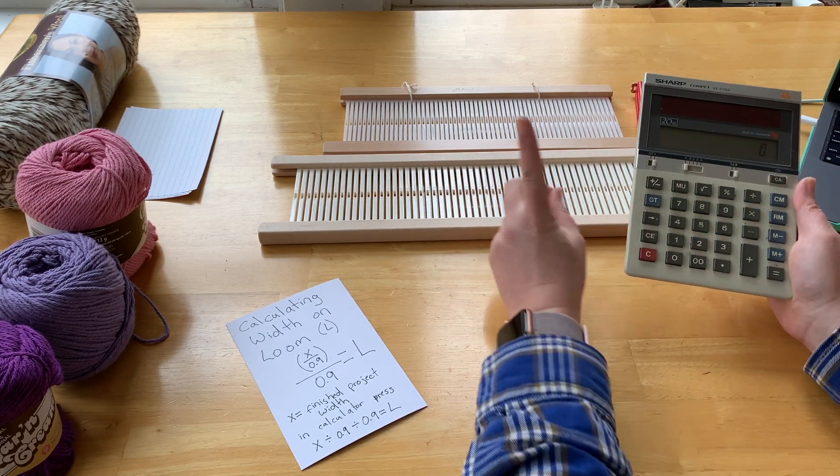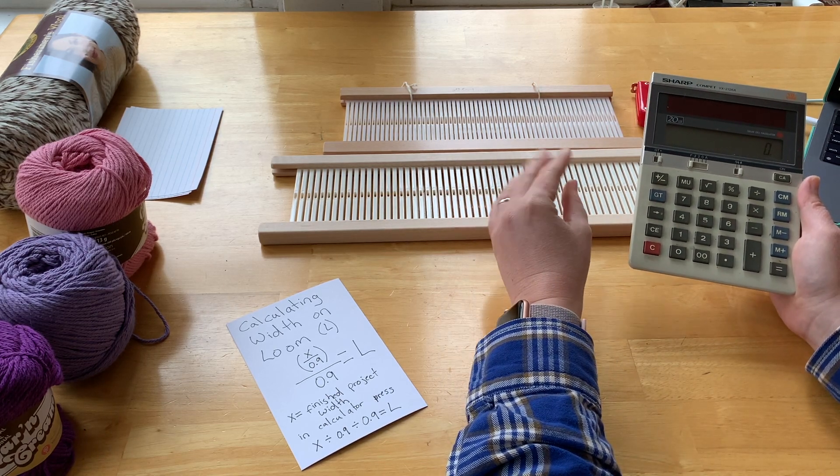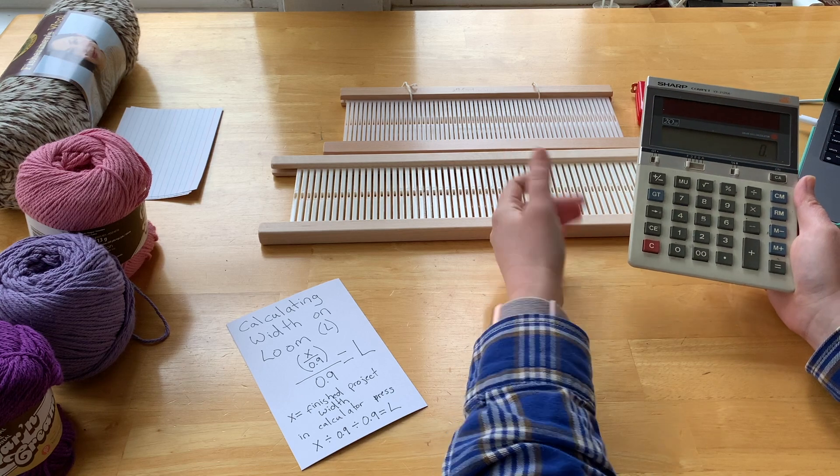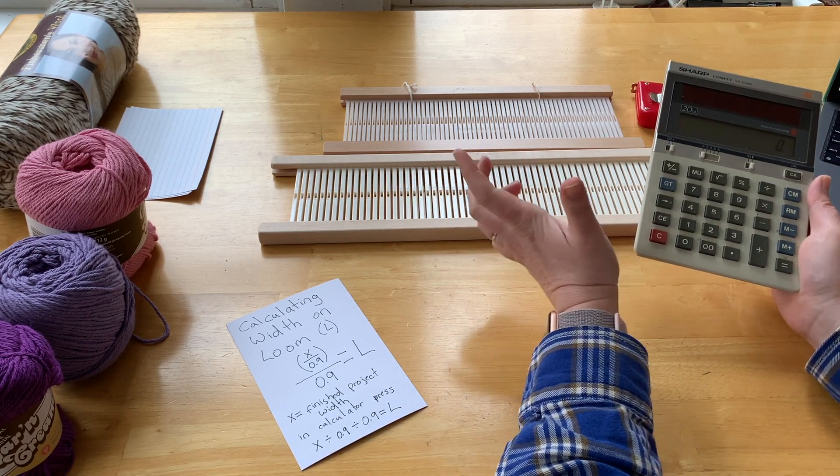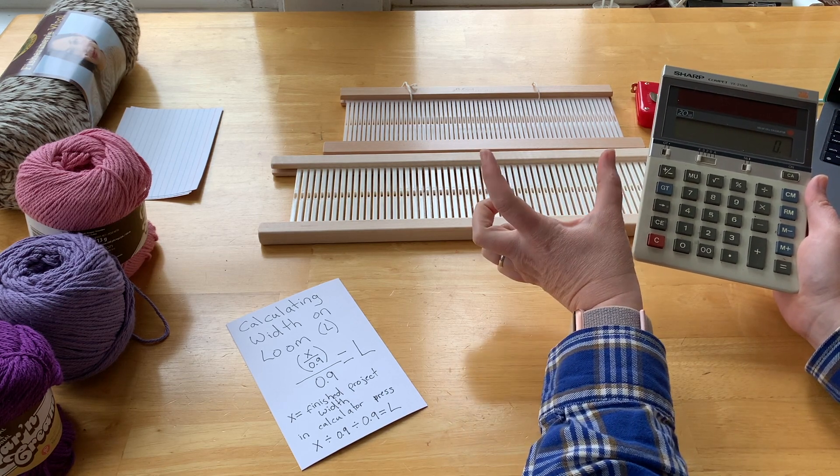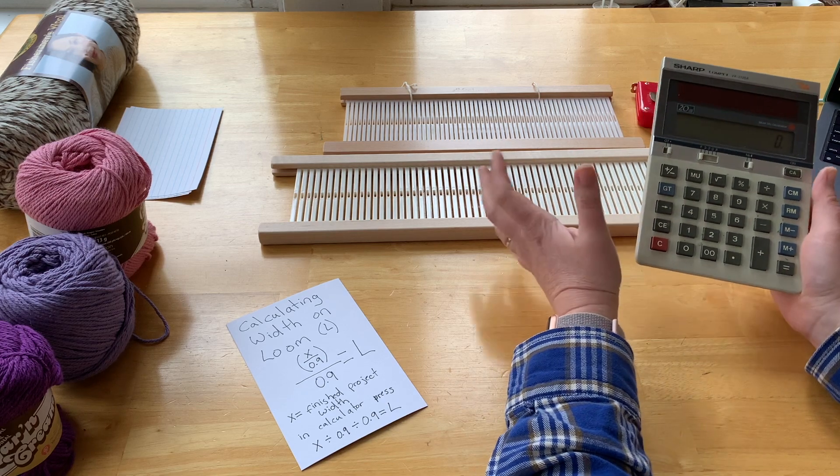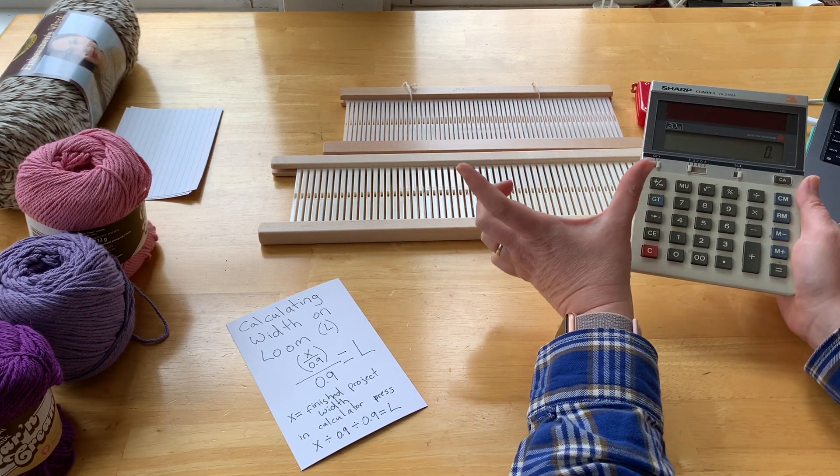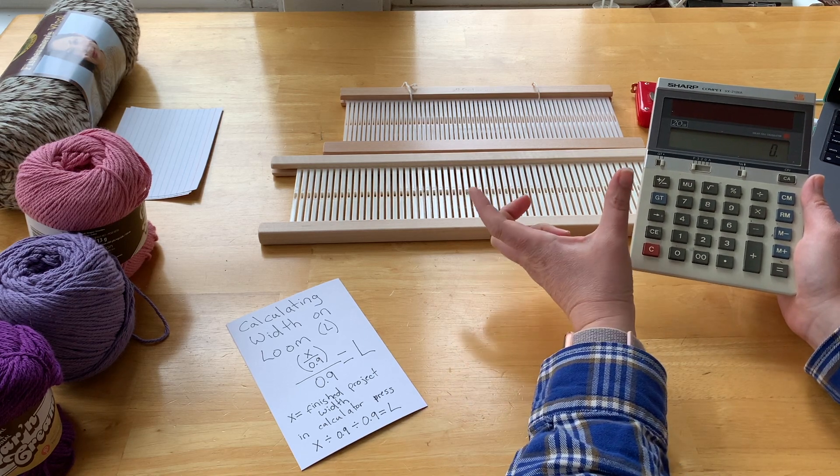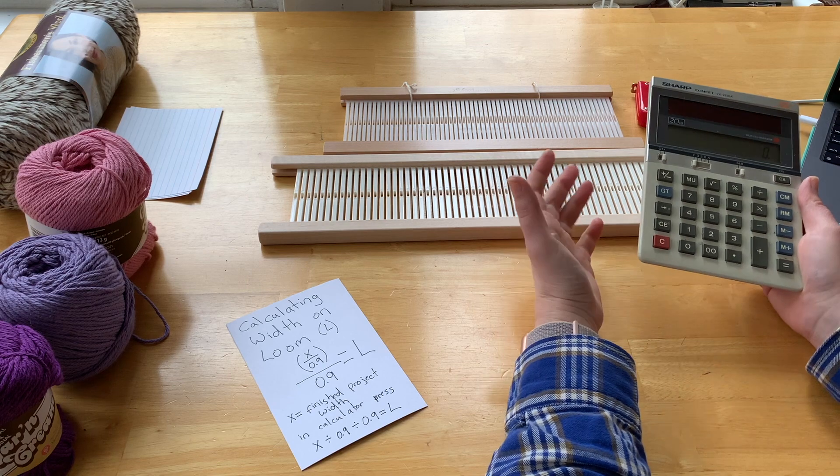The first is that if you plan to wet finish your piece or wash it ever, you need to take into account that in general, most woven pieces shrink about 10% when you wash or wet finish them. Further, when you are weaving, there's about 10% draw-in or tightening up of the warp threads as you weave. So that's another 10% of shrinkage you need to take into account.